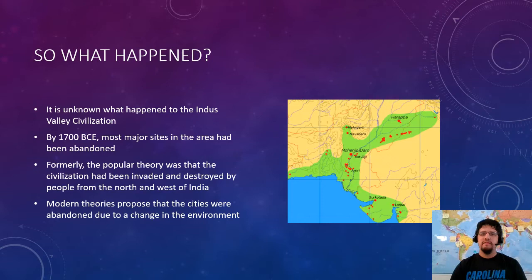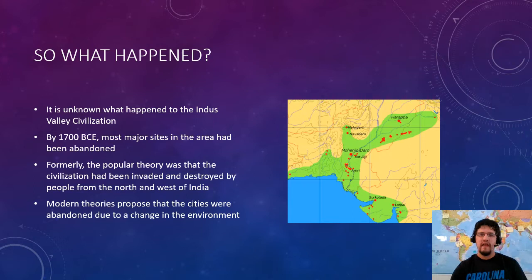As to what happened to the IVC — well, that's a great historical mystery. By 1700 BCE, most of the major sites had been abandoned, and the ones still standing were using much less complicated pottery, and there's even less of that mysterious writing. The popular theory used to be that a group of people came through various passes to the northwest, invaded, and destroyed the IVC. Those people were called Aryans, which is really weird and almost certainly wrong.